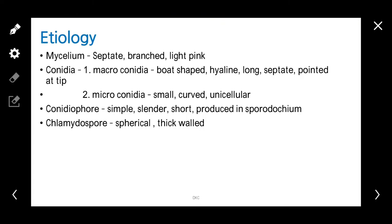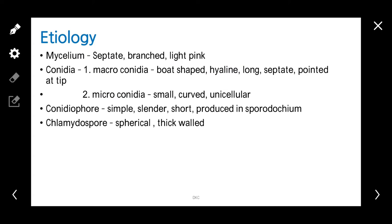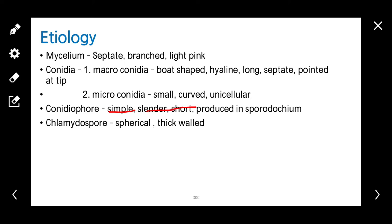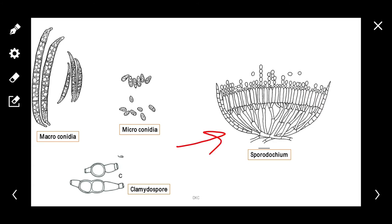Coming to the etiology of Fusarium. Fusarium belongs to subdivision Deuteromycotina. The mycelium is septate, branched, and light pink in color. It produces two types of conidia: macroconidia and microconidia. Macroconidia are boat-shaped, hyaline, long, and septate. Microconidia are small, curved, and unicellular. The conidiophores are simple, slender, short, and produced in sporodochia. A sporodochium is an asexual fruiting body.